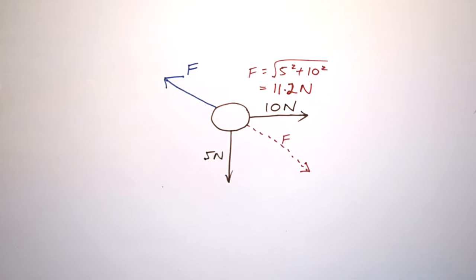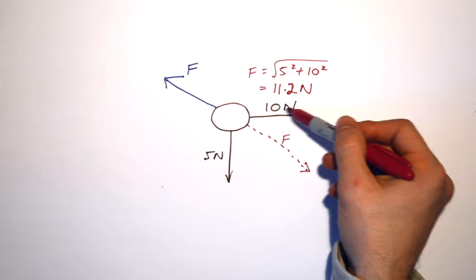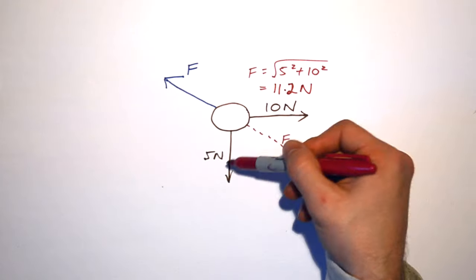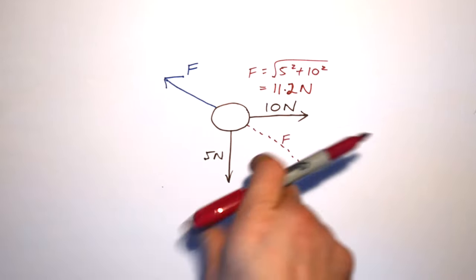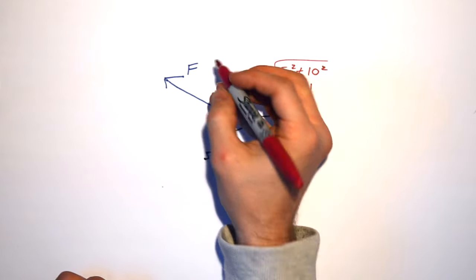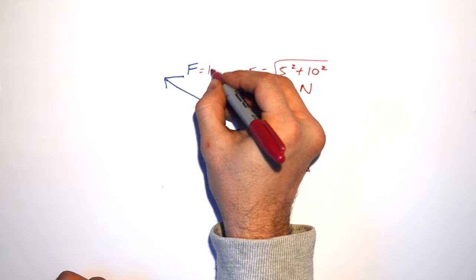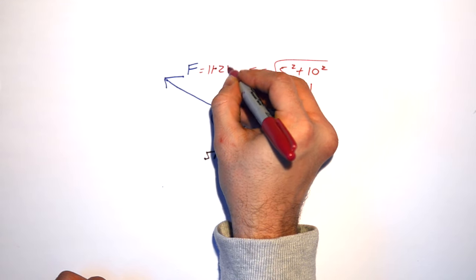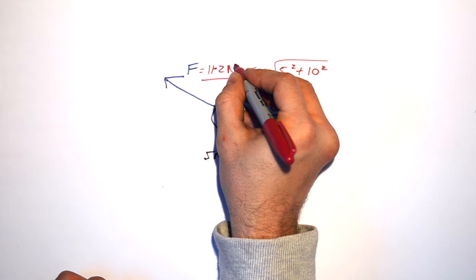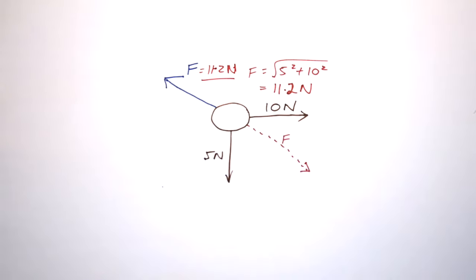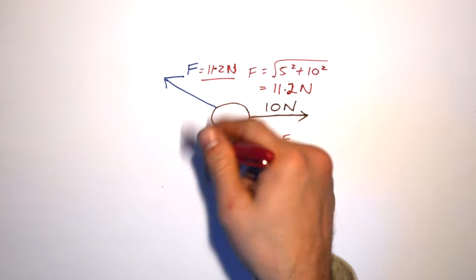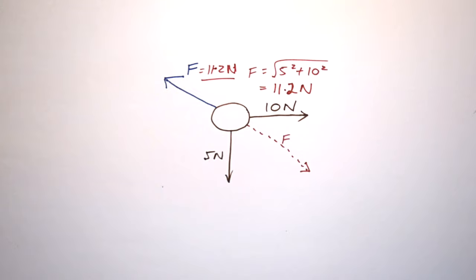That gives me 11.2 Newtons. All I've found is the resultant force due to these two perpendicular forces. I know the third force must have the same magnitude but act in the opposite direction. This system is now in equilibrium — there's no resultant force.